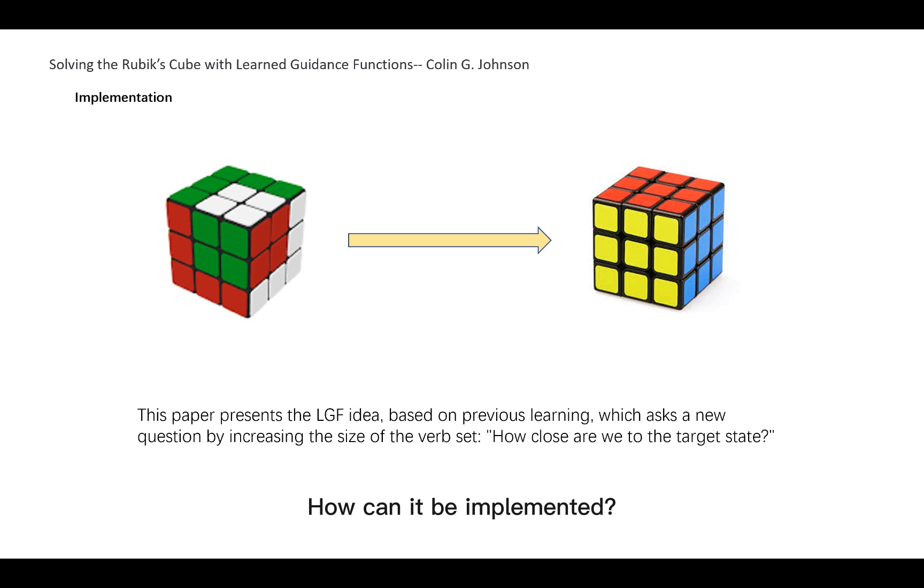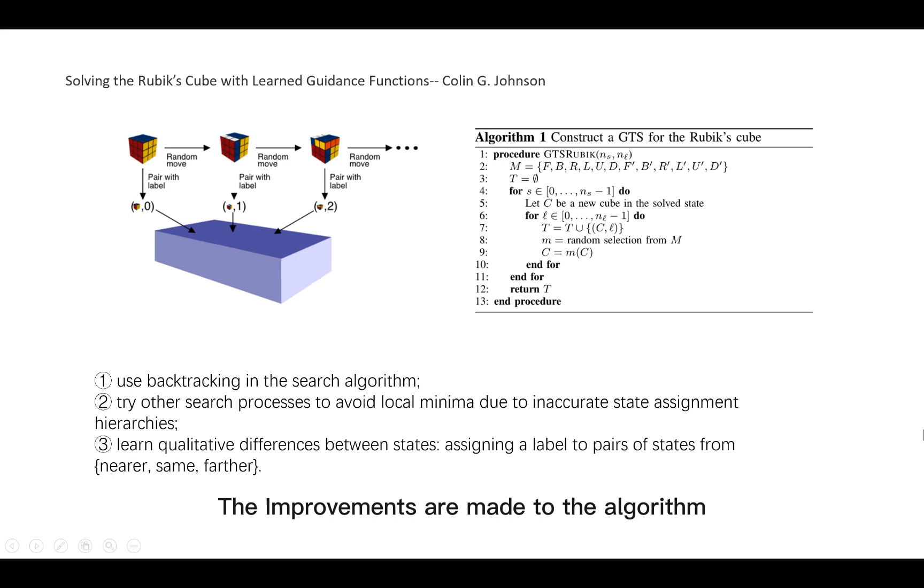How can it be implemented? This paper presents the LGF idea based on previous learning, which asks a new question by increasing the size of the verb set: how close are we to the target state?